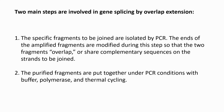There are two main steps involved in the gene splicing by overlap extension method. In the first, specific fragments to be joined are isolated by PCR. The ends of the amplified fragments are modified so that the two fragments overlap. In the second step, the fragments are joined using PCR.